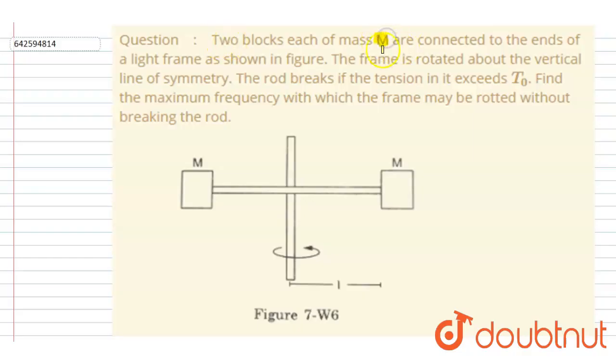Two blocks each of mass m are connected to end of a light frame as shown in the figure. The frame is rotated about the vertical line of symmetry. The rod breaks if the tension exceeds T naught. Find the maximum frequency with which the frame may be rotated without breaking the rod.